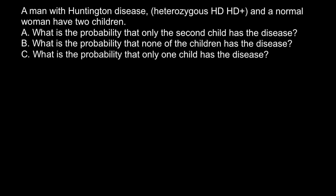Hello and welcome to Nikola's Genetics Lessons. Today I got a message from one of my subscribers with a problem: a man with Huntington's disease who is heterozygous and a normal woman have two children. There are three questions — what is the probability that only the second child has a disease, that none of the children has a disease, and that only one child has a disease? I encourage you to pause the video, try to solve the problem on your own, then compare your answers with mine.